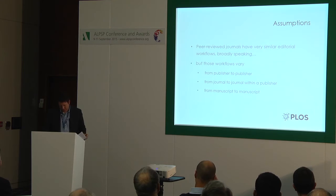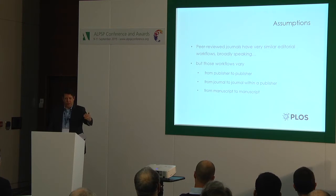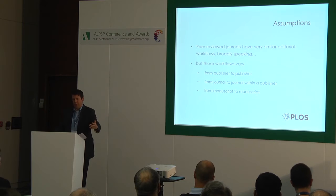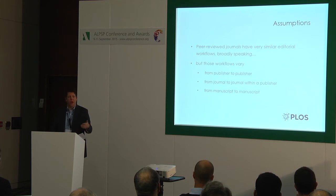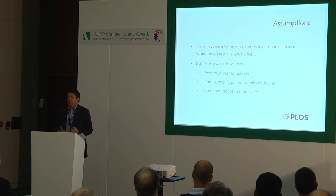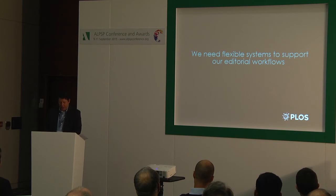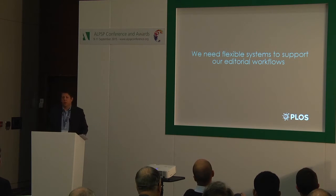Some assumptions this talk is based on: the first is that peer-reviewed journals largely have very similar workflows — the paper comes in, you assign it to an editor, the editor chooses peer reviewers, they write the reviews, there's an editorial decision, and if it's accepted, you publish it. But we all know those workflows vary — different publishers have different workflows, and even at the journal level the workflow may vary depending on the article. The conclusion I draw is that we need flexible systems to support our editorial workflows.